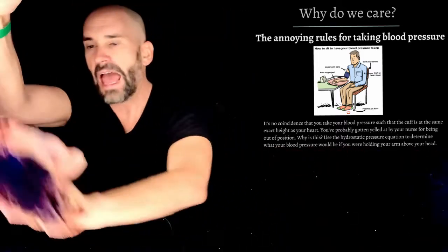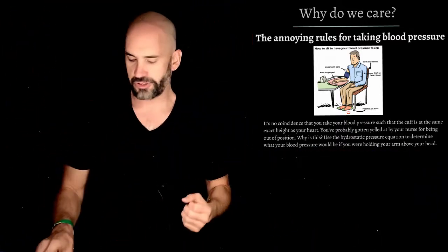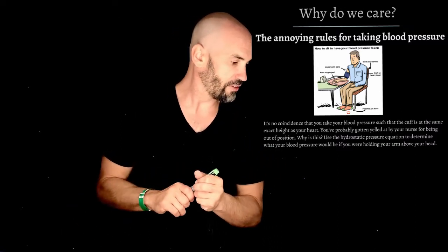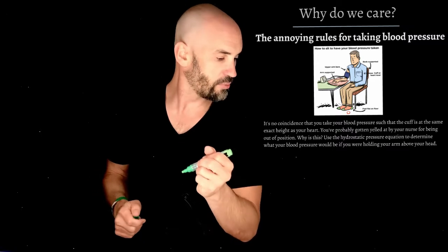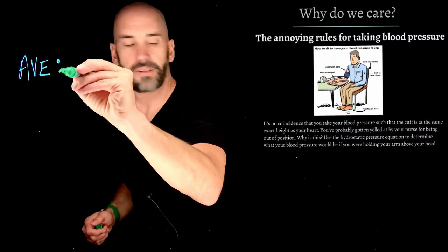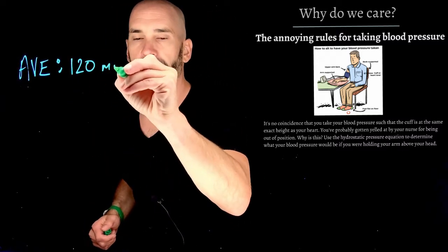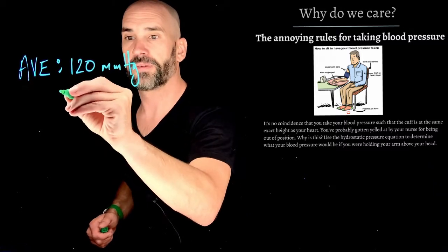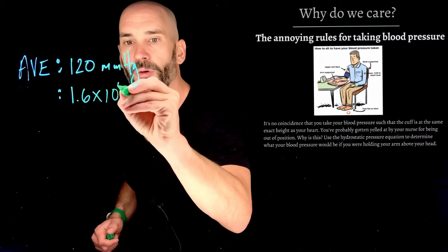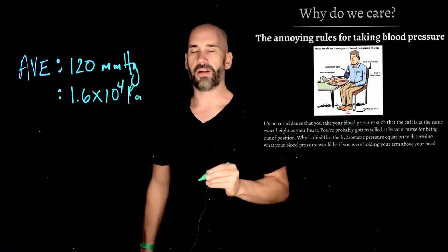Now here's the thing. If you're having your arm at your heart, your nice normal height, taking your blood pressure here, your average systolic pressure is going to be 120 millimeters of mercury. So your average systolic will be 120 millimeters of mercury. Now I do the conversion, and this is actually 1.6 times 10 to the 4 pascals.